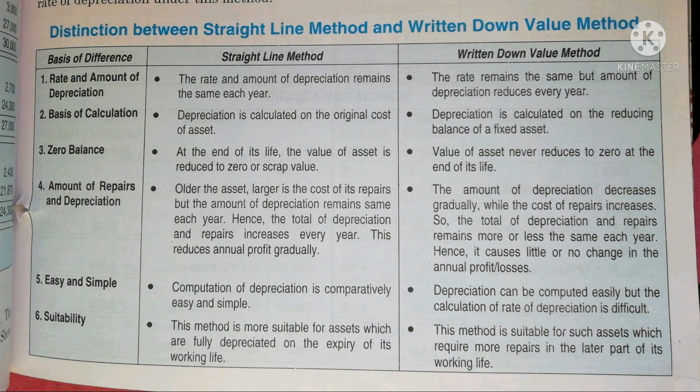The sixth difference is suitability. Under the Straight Line Method, this method is more suitable for assets which are fully depreciated on the expiry of their working life. For example, if an asset has a life of five years, it is fully depreciated to zero by the end of those five years, making this method suitable for such assets.